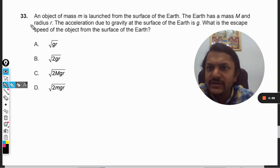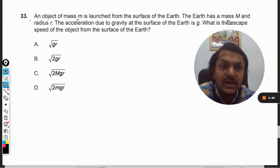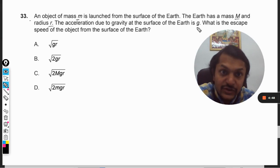Okay dear students, let us see what is there in this question. An object of mass m is launched from the surface of the Earth. The Earth has a mass capital M and radius r. The acceleration due to gravity at the surface of the Earth is g. What is the escape speed from the surface of the Earth?